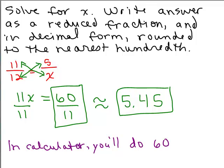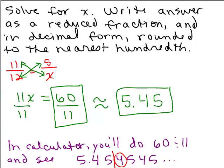So in the calculator, you'll do 60 divided by 11, and see 5.45, 4, 5, 4, 5, you know, on and on and on. And this time when I round, since this next number is smaller than 5, we keep it to 5.45. We don't round up. And so there we are. So we've done four problems.